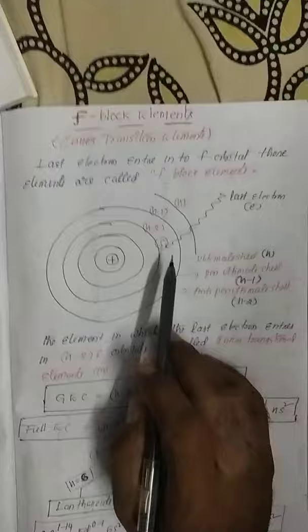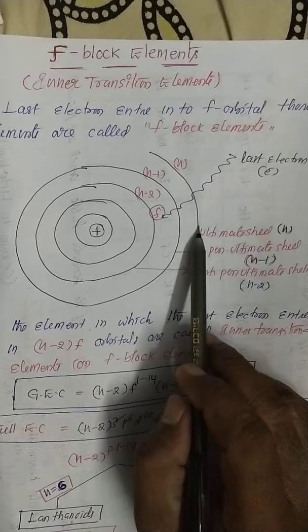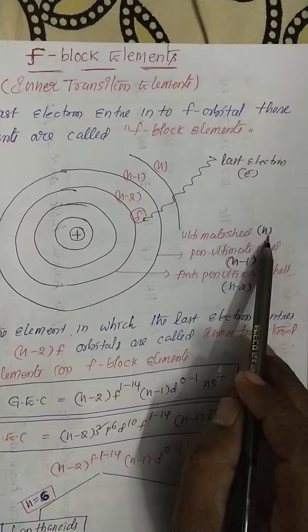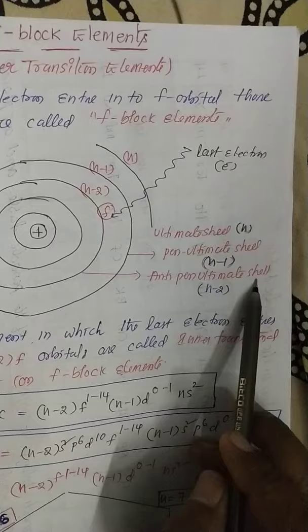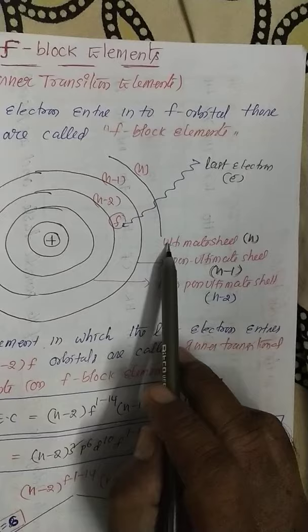See here the atomic structure carefully. The last shell is commonly known as the ultimate shell, represented by small n. The last-before shell is the penultimate shell, represented by n minus 1, and the shell before that is the ante-penultimate shell, represented by n minus 2. The last shell is also the valency shell or outermost shell.